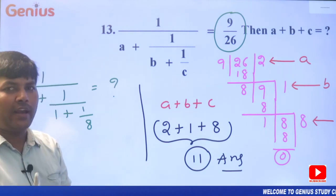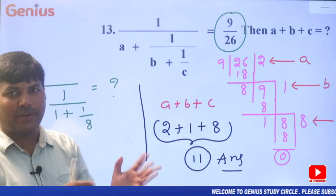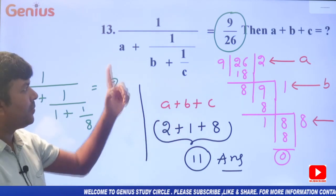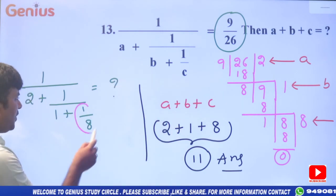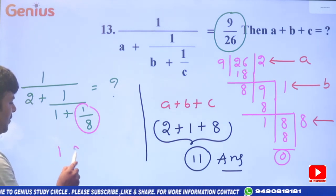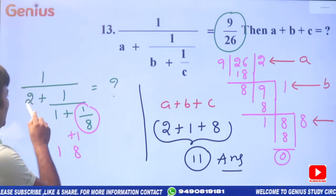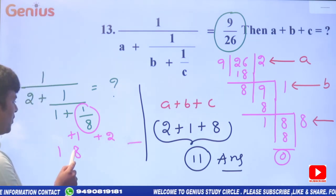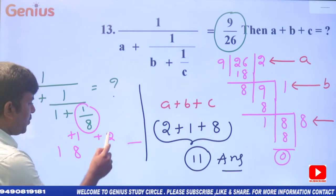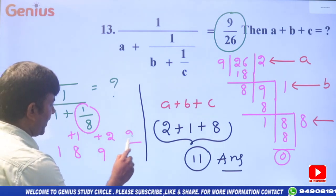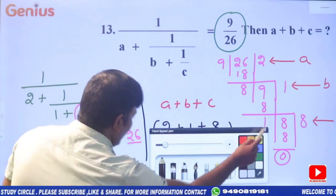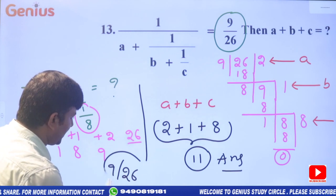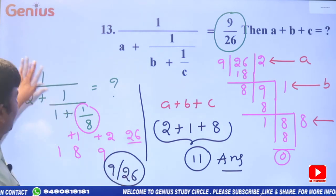Take 1 space more: 8 ones are 8 plus 1 equals 9; 9 twos are 18 plus 8 equals 26. So our answer is 9 by 26 — confirmed. Our answer is 9 by 26.